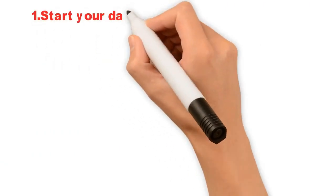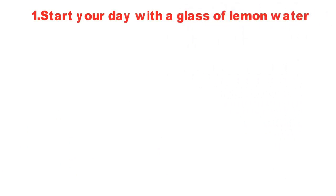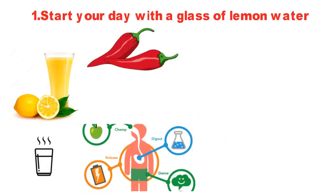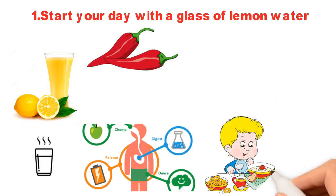1. Start your day with a glass of lemon water. Make it a rule to drink a glass of lukewarm water with lemon juice and a pinch of cayenne pepper every day. This ritual will start your metabolism by the time you begin your breakfast.